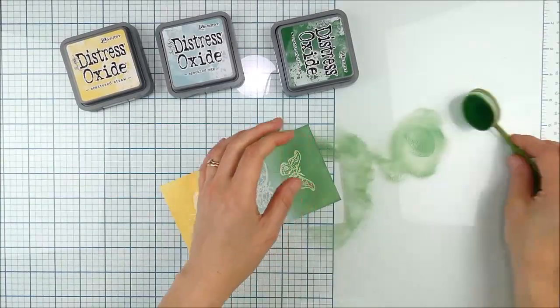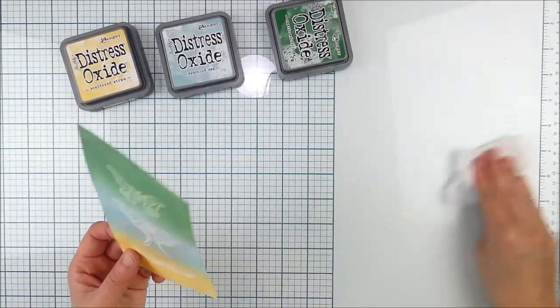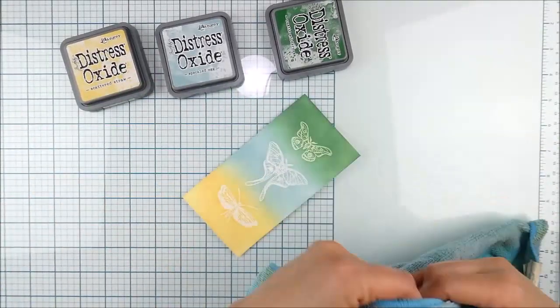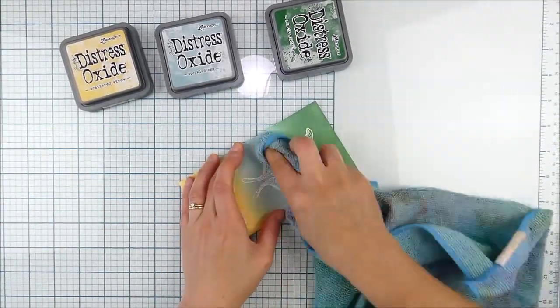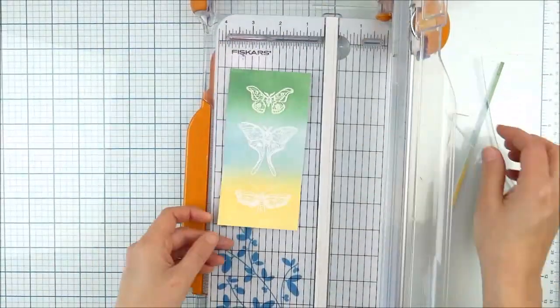That final color was rustic wilderness - it's a great green color. I did the same thing, back and forth between the brushes to get a nice smooth blend. Then I'm just cleaning off my work surface really well. I used a wet wipe and that microfiber cloth to clean all that excess off.